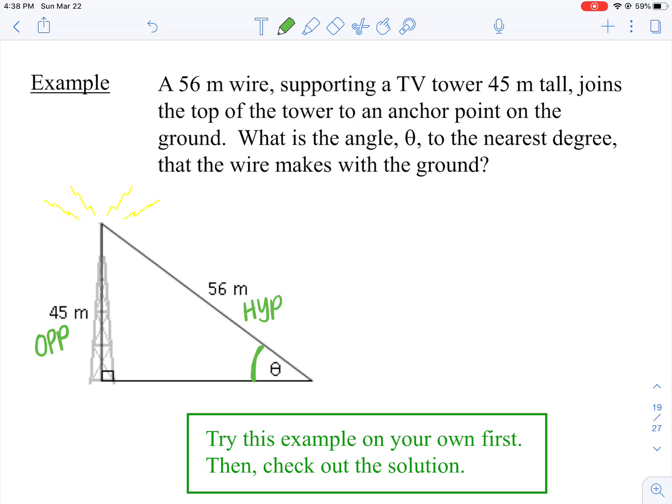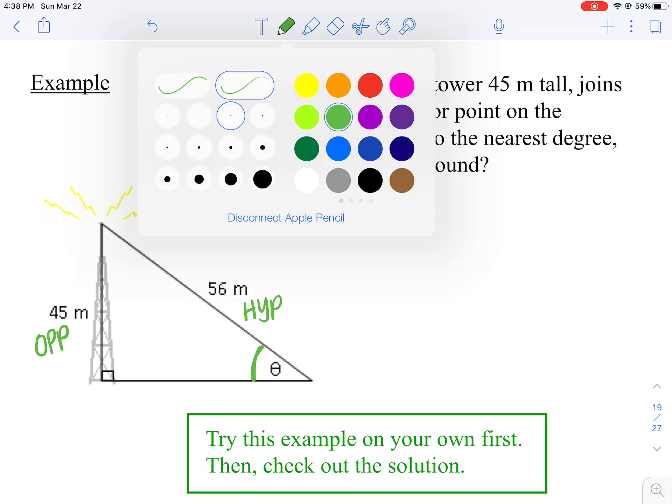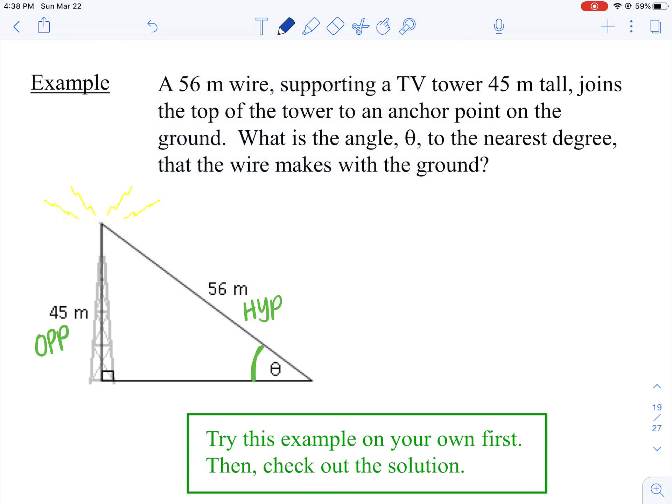So we've got O and H and we're looking for an angle. So we can't use the 180 rule or triangle sum theorem because we don't know two angles, we know two sides. So we're going to use sine inverse.